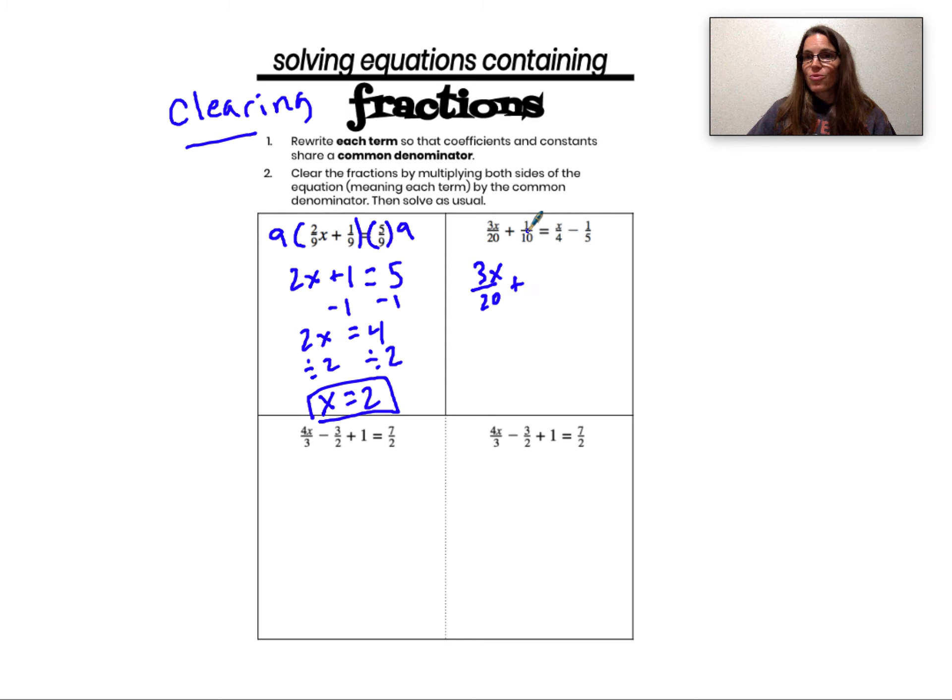I can't just write 1 tenth as 1 twentieth. I don't get to just magically make the denominator 20. I have to think, what do I multiply both the numerator and the denominator by so that my denominator is 20? What that means is I have to multiply both the numerator and the denominator by 2, so 1 tenth is rewritten as 2 twentieths.